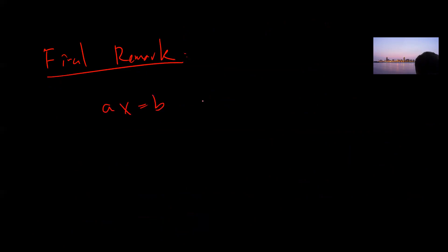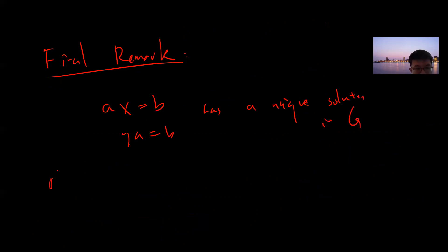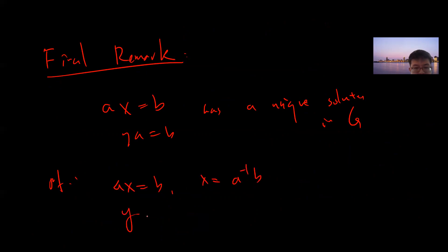As a final remark, next time we'll talk about subgroups, cosets, and other things. Note that if ax = b, then x = a⁻¹b is the unique solution in G; and if ya = b, then y = ba⁻¹. The proof is trivial since every element in the group has an inverse. See you in the next video — please subscribe to the channel.